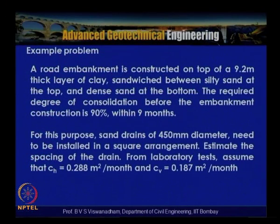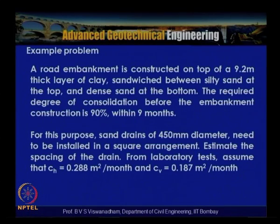The procedure is: calculate U_V for 90% target U_VR, then determine U_R using Carrillo's equation, express T_R as a constant divided by N², and by trial for N = 5, 6, 7, 10 find the N value that gives U_R closest to the desired value. The drain spacing can then be estimated for both square and triangular arrangements and compared.